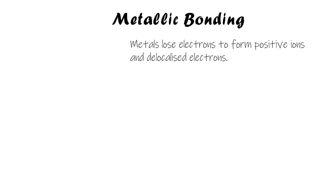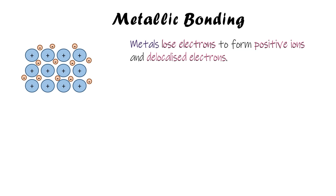The last type is metallic bonding, and this happens only within metals — it happens inside a sample of a metal or between metals. The metal atoms lose electrons from their outer shell, making them form positive ions. The electrons they lose become delocalized, meaning they're no longer attached to any one ion and float around in a sea of delocalized electrons.